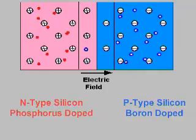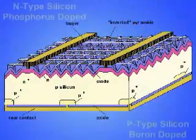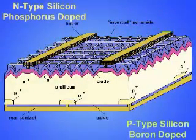When a p-n junction is made so that light can strike its top surface, and metal conductors are attached to the p- and n-type sides, a solar cell is formed.